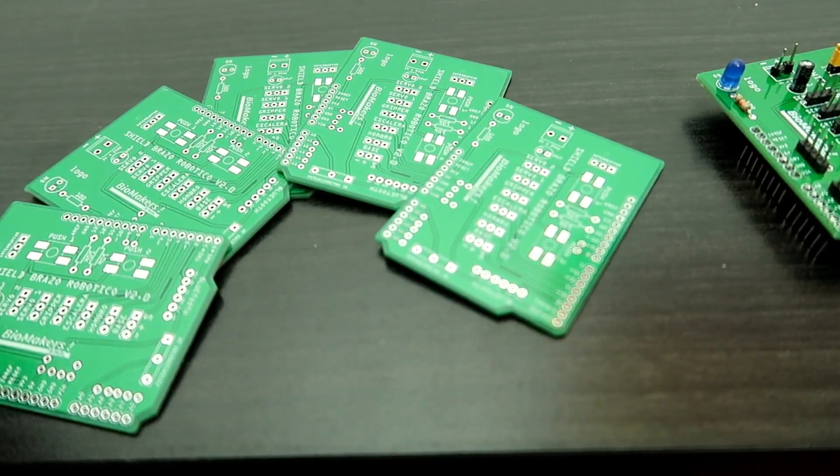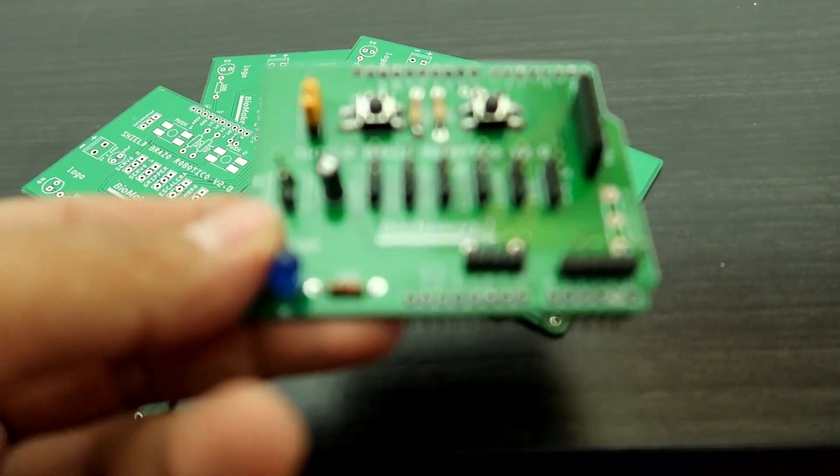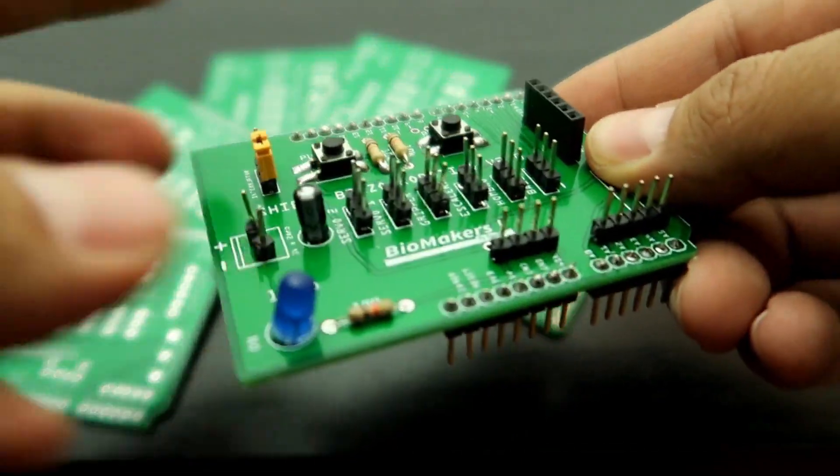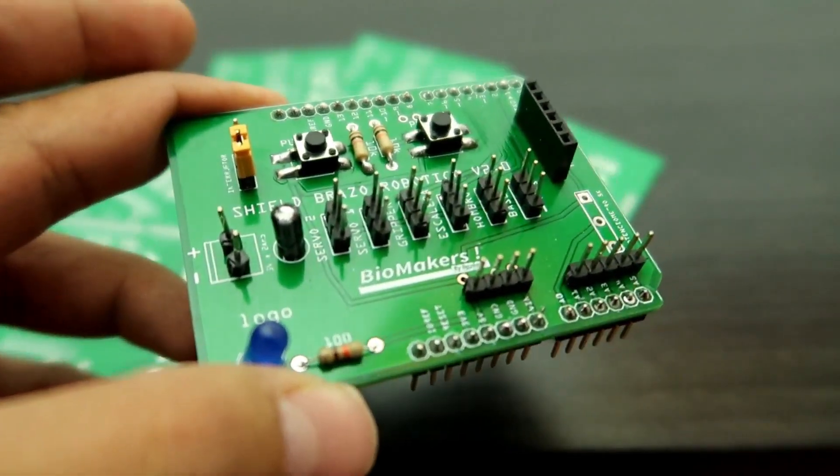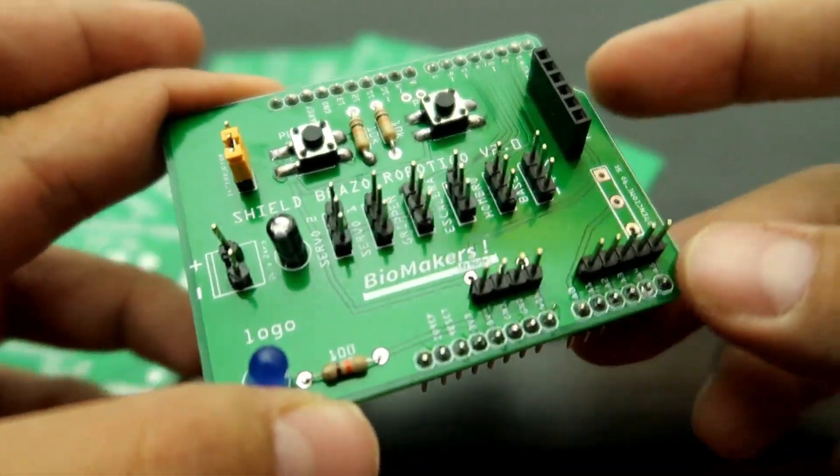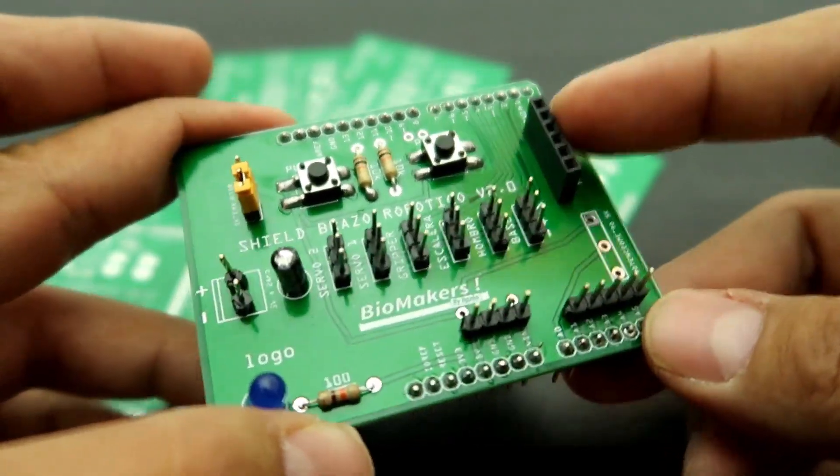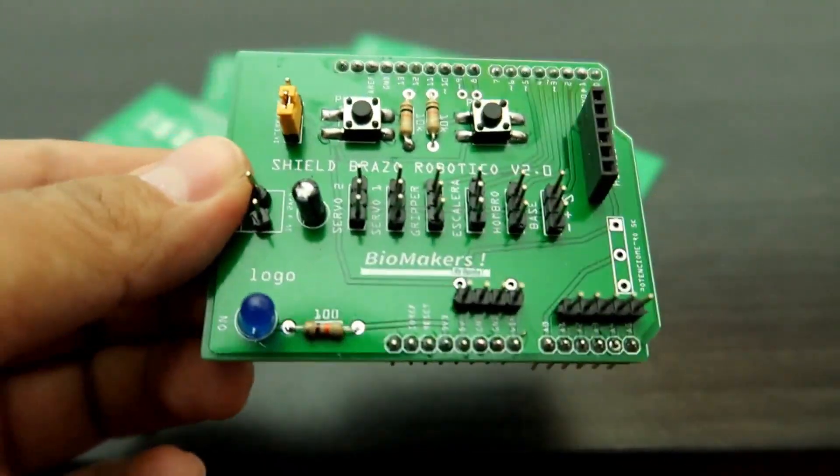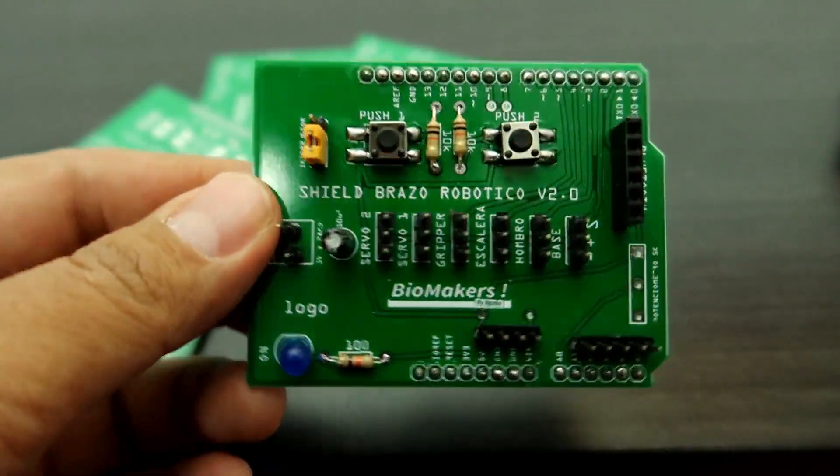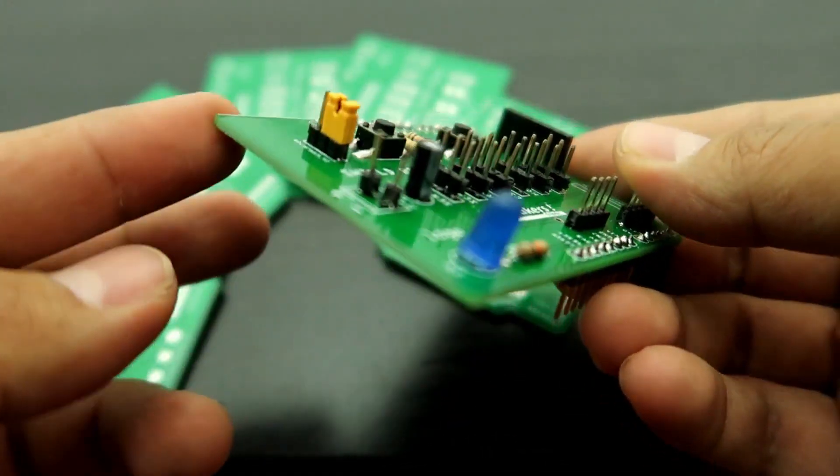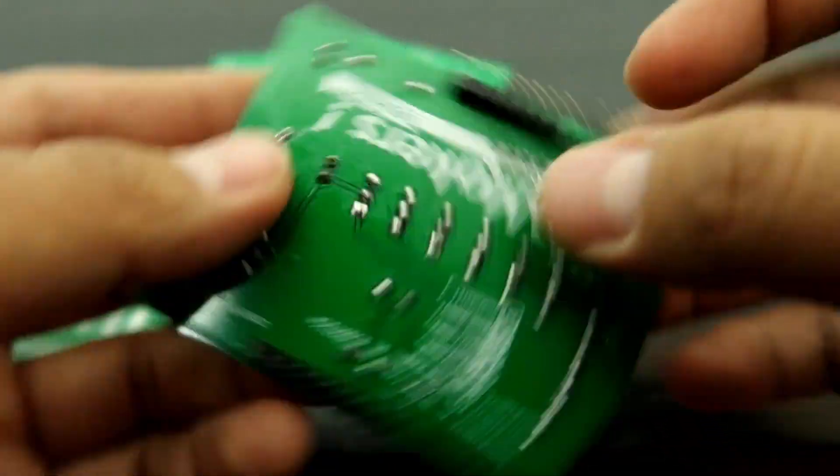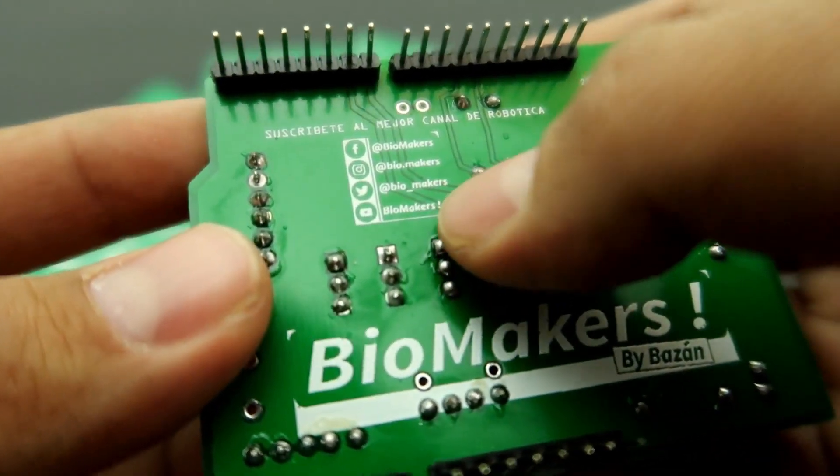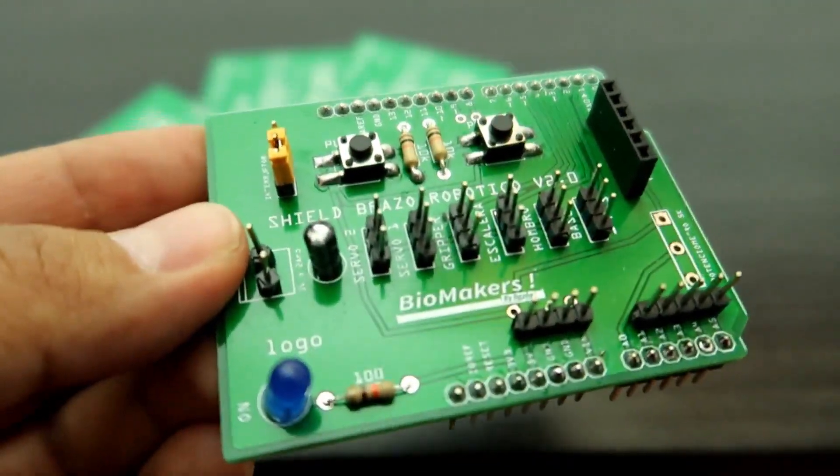Este es el PCB que vamos a estar utilizando para este proyecto. Es uno como más general, ya lo he soldado. Podemos utilizar aquí servos, podemos utilizar aquí las señales analógicas, algunos pines. De hecho aquí es donde vamos a colocar los pines para el puente H. Aquí por si lo queremos hacer bluetooth. Díganme en los comentarios si quieren que hagamos esto bluetooth, o sea que controlemos a la hormiga mediante el celular, y también podamos transmitir en vivo desde una cámara. Aquí están todas las redes sociales de BioMakers.